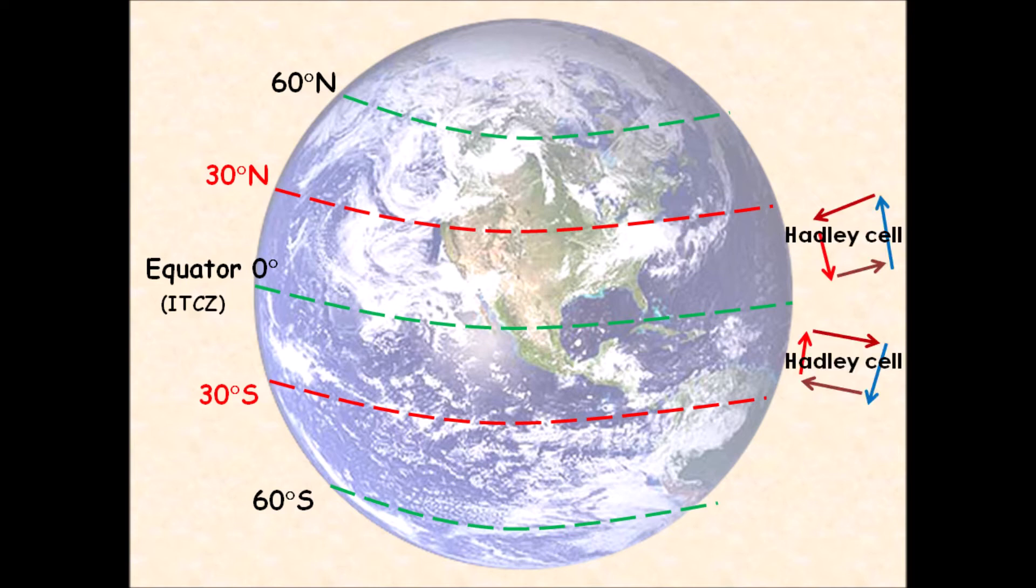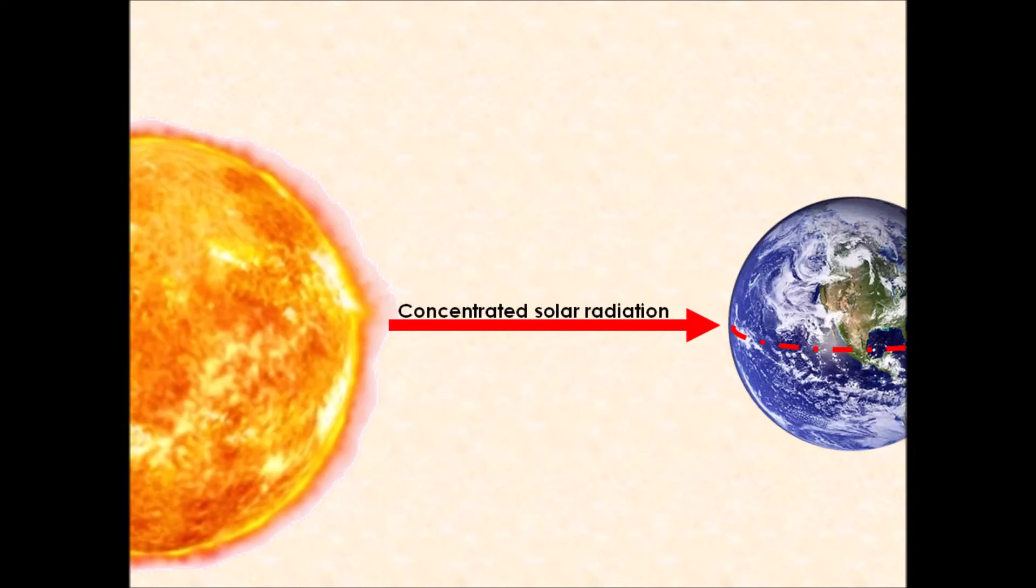When it comes to global atmospheric circulation, there are three main cells. You've got your Hadley cell and that's the first cell we're going to draw on the right-hand side of our planet. The Hadley cell is where we have air moving between the equator and 30 degrees north and 30 degrees south.